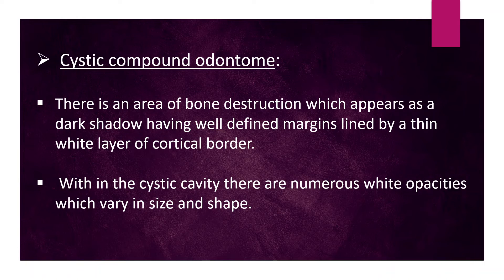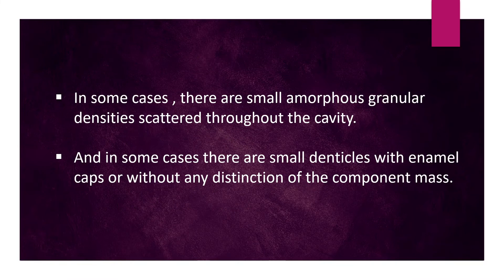Within the cystic cavity there are numerous white opacities which vary in size and shape. In some cases there are small amorphous granular densities scattered throughout the cavity, and in some cases there are small denticles with enamel caps or without any distinction of the component mass.